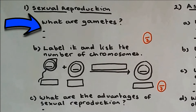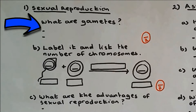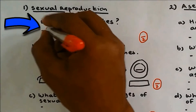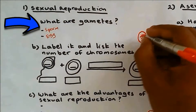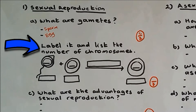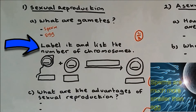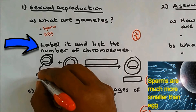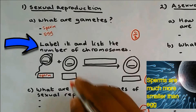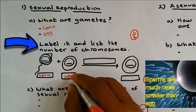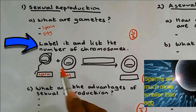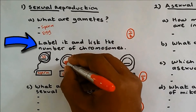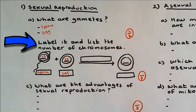Question number one: what are gametes? Gametes are sex cells — these are sperm and egg. Label it and list the number of chromosomes. These are the gametes: this is sperm and this is the egg. You have to also list the number of chromosomes.